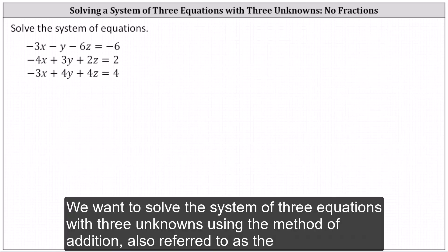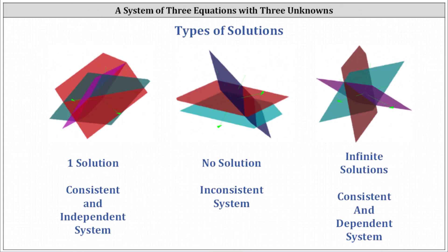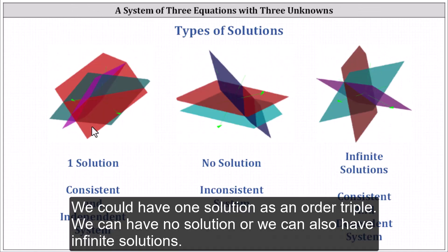We want to solve the system of three equations with three unknowns using the method of addition, also referred to as the method of elimination. Recall when solving this type of system, there are three possible outcomes: we could have one solution as an ordered triple, we can have no solution, or we can also have infinite solutions.